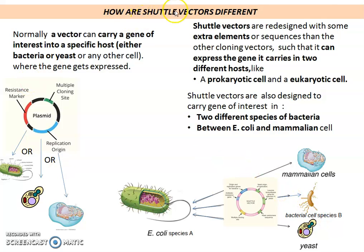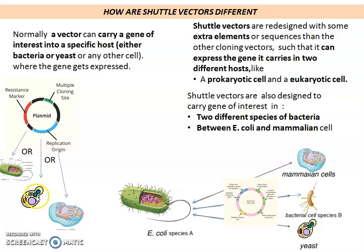How are shuttle vectors different? Any cloning vector — like pBR322 or pUC19 — carries a gene of interest in a specific host. That host may be a bacteria or a yeast cell, but only one at a time. A particular vector artificially designed can be used only in one cell. You can deliver a gene of interest using it in E. coli, then you cannot use it for any other organism — or use it for yeast, but not for any other.